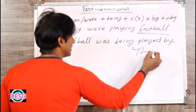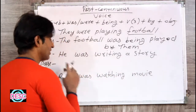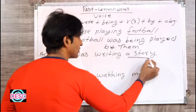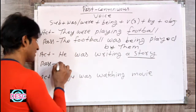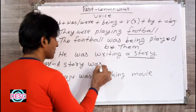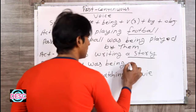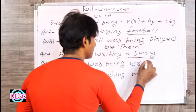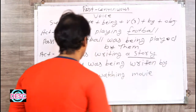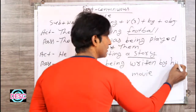He was writing a story — voh ek kahani likh raha tha. 'A story' is the object. So the passive becomes: A story was being written by him. He ka object kya hoga? Him.